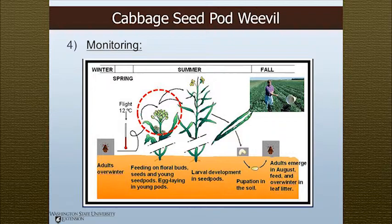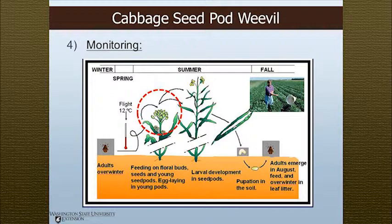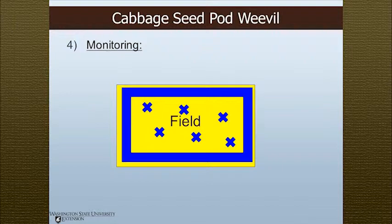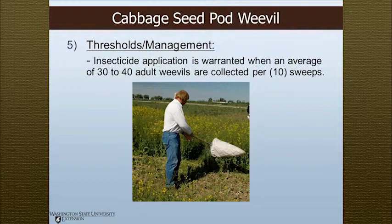Monitoring for this pest can be done using a sweep net. Using a canvas sweep net, go out at the bud stage and take a 180-degree sweep, basically right to left through the field. It is recommended to monitor both the perimeter and the interior of the field — select 10 locations, take 10 180-degree sweeps, and count the insects in your sweep net. If you're reaching levels of 30 to 40 adults per 10 sweeps, then you need to be applying some type of insecticide.